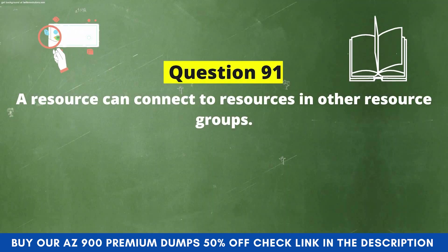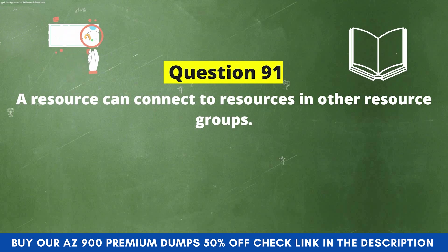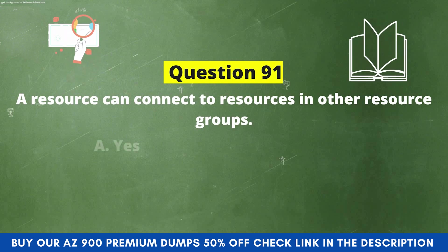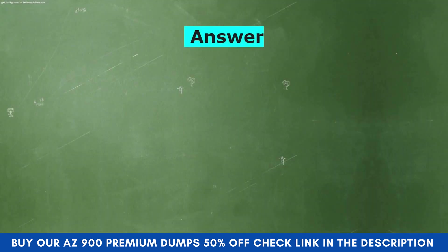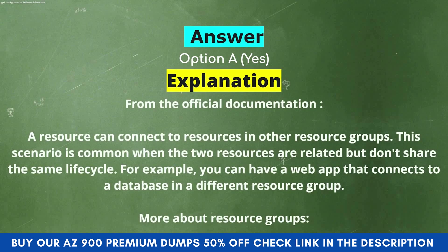Next question: Can a resource connect to resources in other resource groups? Option A: Yes. Option B: No. The correct answer is Option A, Yes. Explanation: A resource can connect to resources in other resource groups. This scenario is common when two resources are related but don't share the same lifecycle — for example, a web app that connects to a database in a different resource group.